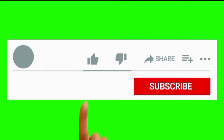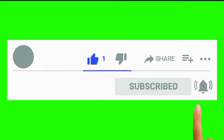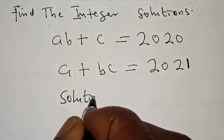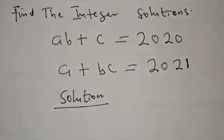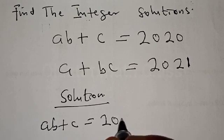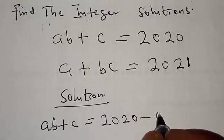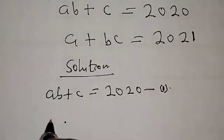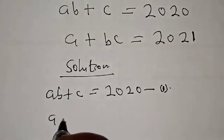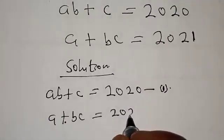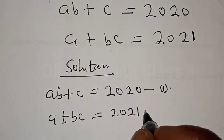But before I proceed, please don't forget to like, share, comment, and subscribe. Thank you. Solution. We have AB plus C equal to 2020 — let's call this equation 1. Then we have A plus BC equal to 2021 — let's call this equation 2.